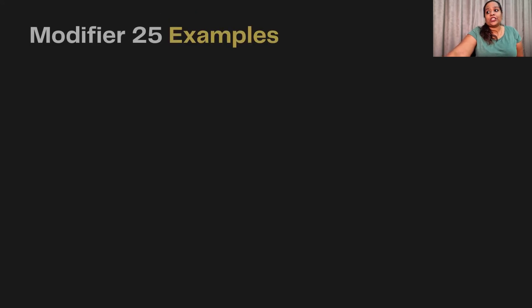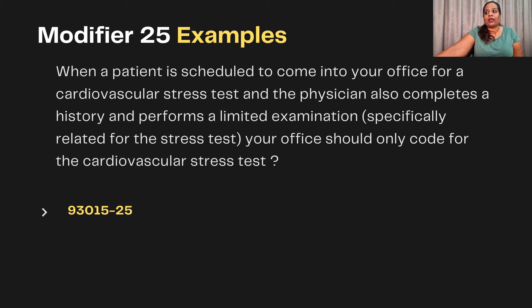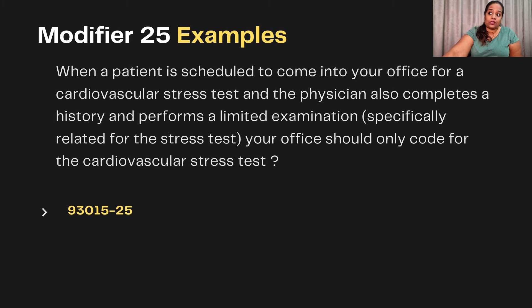Another example: A patient is scheduled to come in for a cardiovascular stress test. The physician also completes a history and performs a limited examination. Your office should code for the cardiovascular stress test along with modifier 25. Although the patient came only for the procedure, an E&M is implicitly involved — a person cannot simply request a stress test without a physician evaluation, so modifier 25 is added.